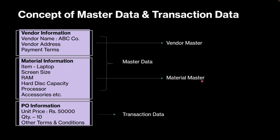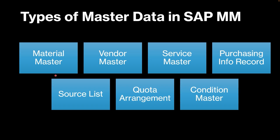This concept of master data is there in every SAP module. Now let's understand the various types of master data available in SAP MM. As discussed earlier, we have material master and vendor master. Then we have service master — as discussed in our service procurement video, you can procure services through SAP MM and enter your service master, storing information about the services to be performed by the vendor. Then you have purchasing info record — this is basically a combination of material master, vendor master, and the pricing conditions. You create a master data telling that this material will be purchased from this vendor at this price.